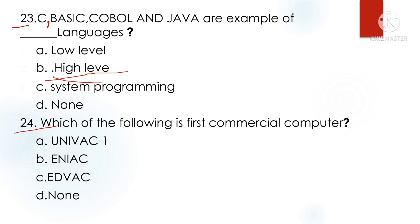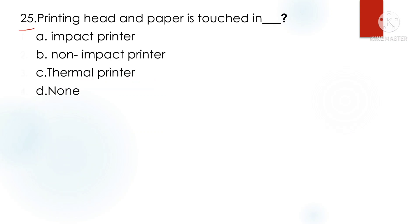Question 24: Which of the following is the first commercial computer? The first commercial computer is UNIVAC 1. Question 25: When the printing head and paper touch in a printer, that is called an impact printer.